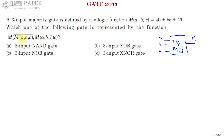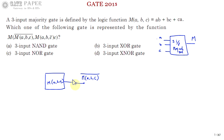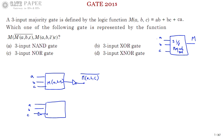Now, the majority gate has inputs: m(a,b,c) complement, m(a,b,c̄), and c. m(a,b,c) complement is simply m(a,b,c) with complement at the output — that is m(a,b,c)'. For m(a,b,c̄), c must be provided with an inverter, so inputs are a, b, c̄, giving output m(a, b, c̄).